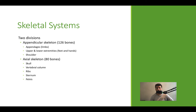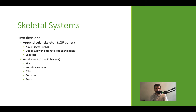The axial skeleton is comprised of the skull, vertebral column, ribs, sternum, and the pelvis. The pelvis is one that gets tossed back and forth — you'll see some references put it in the appendicular skeleton and some put it in the axial. Arguments can be made for both, so don't feel it's exactly set in stone.